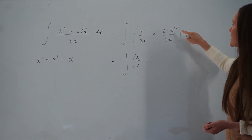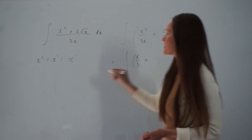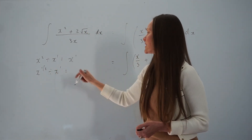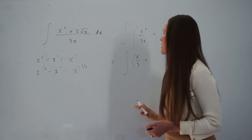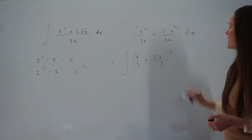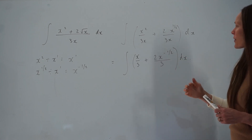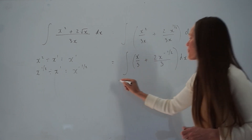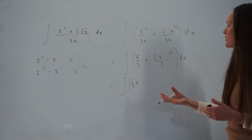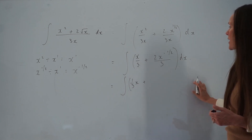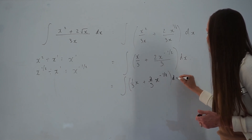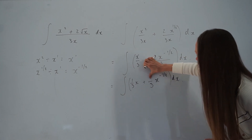Using the same idea for the second fraction, dividing x to the power of a half by x means subtracting the powers: a half take away 1 equals negative 1 half. So we're left with x to the power of negative 1 half, and the simplified fraction is 2x to the power of negative 1 half over 3. I'm going to rewrite x over 3 as one third x, and the second term as 2 thirds x to the negative half, so the numbers are in front of x ready for integration.